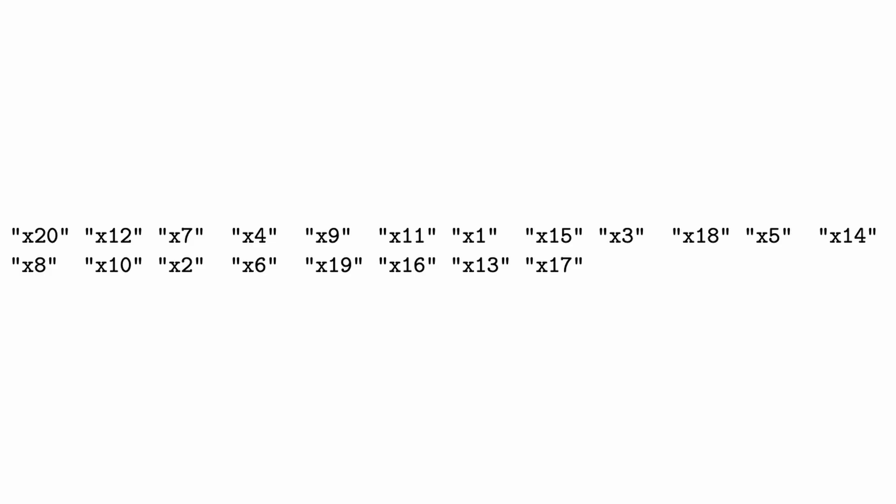Let's say the ordering puts x20 first, then x12, then x7, etc. We take that row from the real data set and replace the random value for x20 with the person's actual x20 score, leaving all other values random. Then we make a second prediction — chances are it'll be better than the first because x20 is now tied to that person's actual y score.